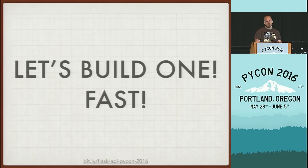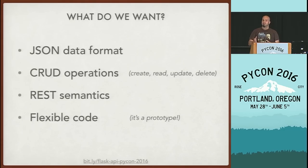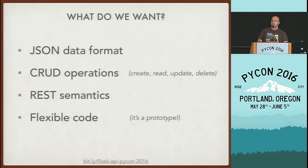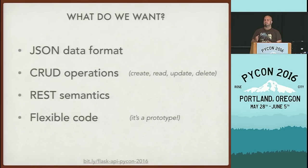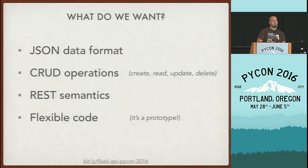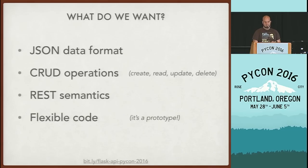Before we get started, let's define what we actually want to build and what we care about. For a very simple prototype API, the things we care about most are a JSON data format, because that's what all the cool kids are using these days, CRUD operations — which is create, read, update, and delete — REST semantics, which is a structure that allows you to treat individual objects as resources. And probably most importantly, we want our API to be very flexible.